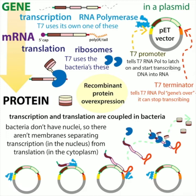In our cells, genes and chromosomes are kept in a membrane-bound compartment called the nucleus, and mRNA copies are taken out into the cytoplasm where the ribosomes are. We don't have to worry about that with bacteria — they don't have a membrane-bound nucleus. Everything happens together in the cytoplasm, so transcription and translation are coupled: the RNA polymerase makes the copies and the ribosomes make the protein directly from that mRNA as it's made. So if we can get as much mRNA as possible of our gene, we can get as much protein as possible.